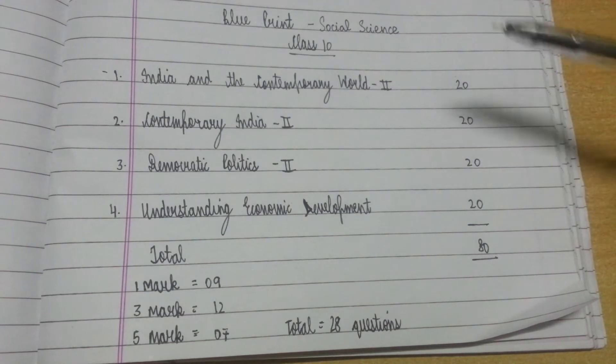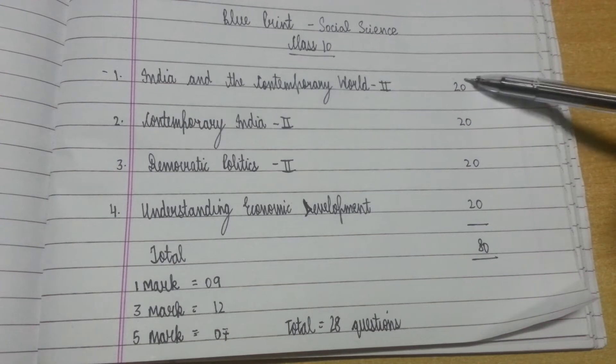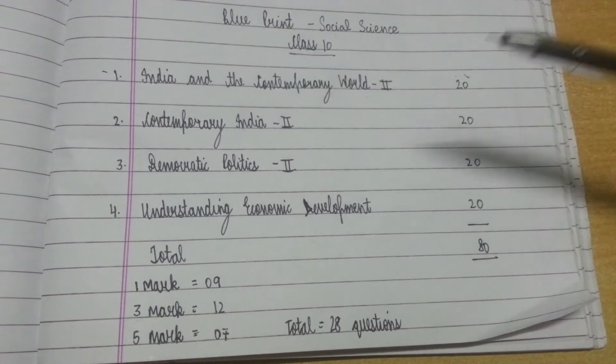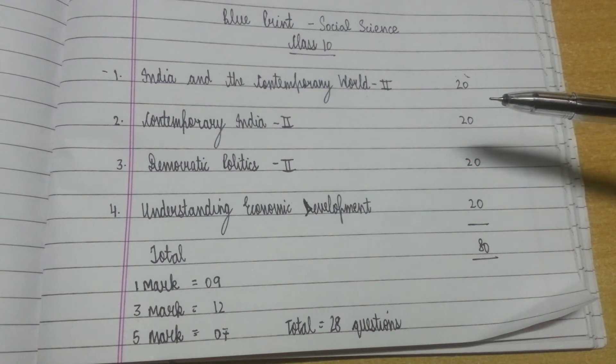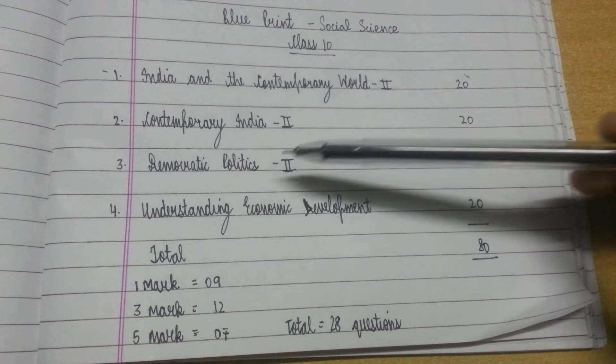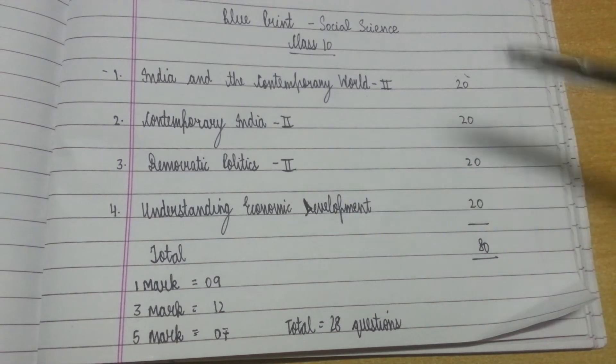From Contemporary India 2, you are going to get marks for 20. Then the book Democratic Politics Part 2, again you are going to get questions for 20 marks.